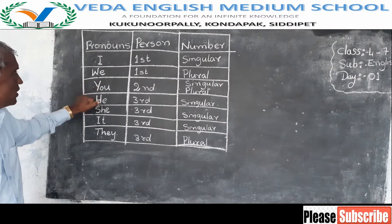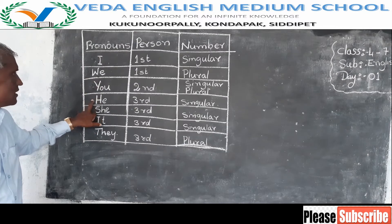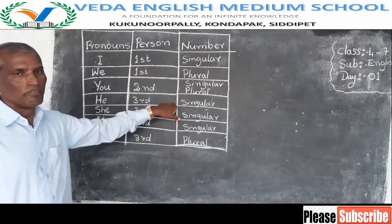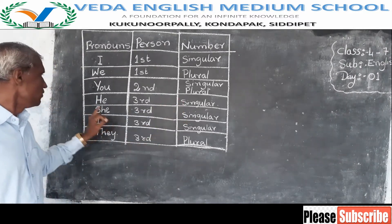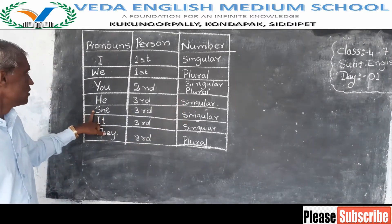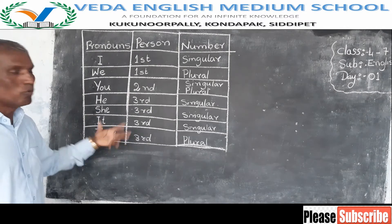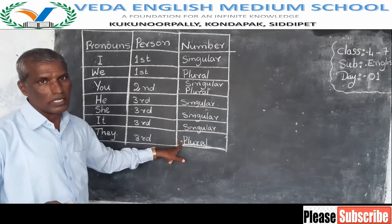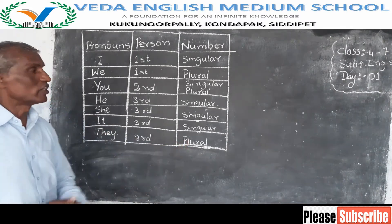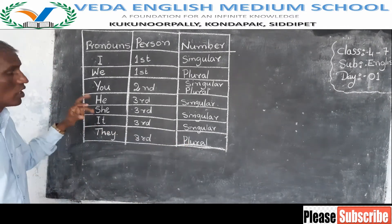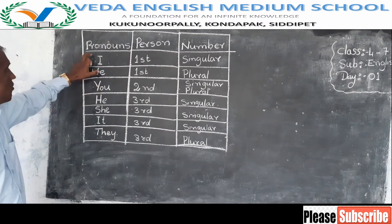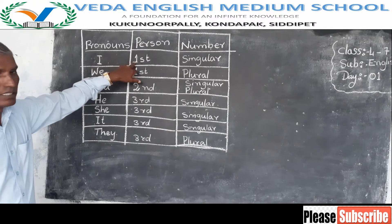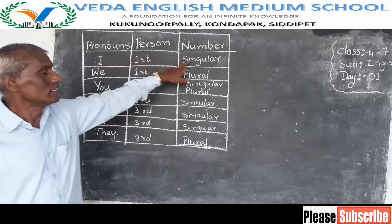If it is one, we call it singular. If it is more than one, we call it plural. So when I is the first person, it is singular, because I is one.